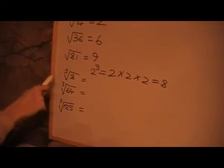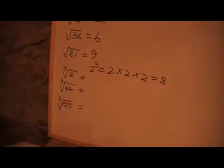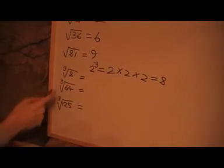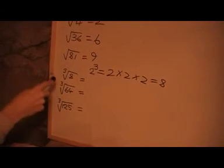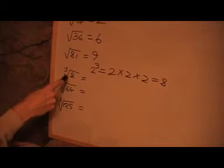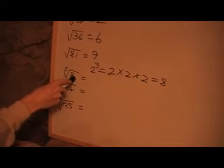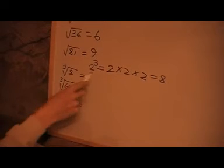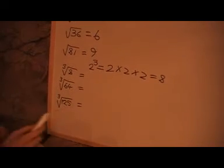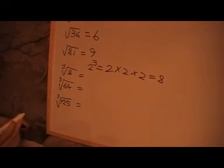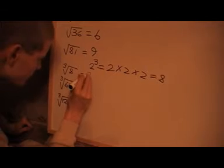Now for the cube root here, what I need to do is I need to find a number that when I times it by itself 3 times, I get this number 8 here. Right, so if I times 2 times 2 times 2, that gives us 8. So the cube root of 8 is 2.